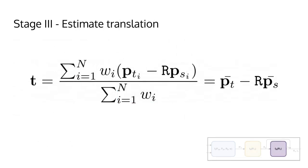In our third and final stage, we estimate the translation. Once the rotation is known, the translation can be extracted in closed form by computing the average of the points in the source and target point clouds.